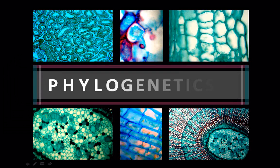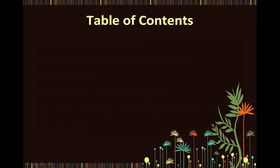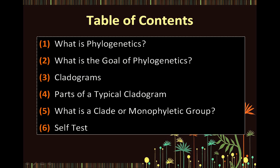You are going to watch an animation about phylogenetics. In this animation, we will define phylogenetics and the goal of phylogenetics. We will discuss cladograms and the parts of a typical cladogram, and lastly, we will discuss the concept of clades or monophyletic groups. This animation will end with a self-test section composed of six questions. Keep in mind that you can pause and rewind this animation at any time.